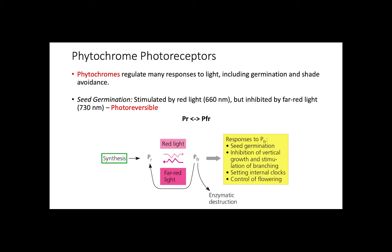Phytochrome photoreceptors are responsible for regulating many responses upon exposure to light, such as germination and shade avoidance. In terms of seed germination, we have to pay special attention to red light and far red light, and the specific receptors for each wavelength.